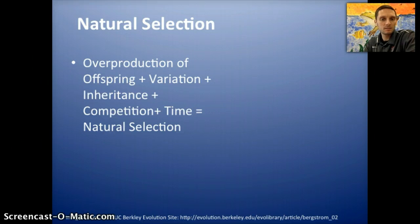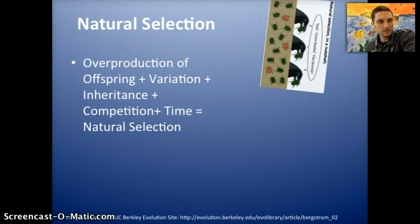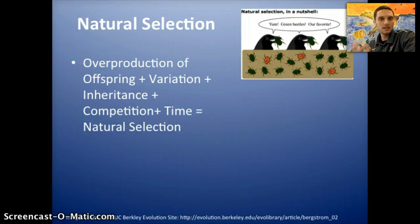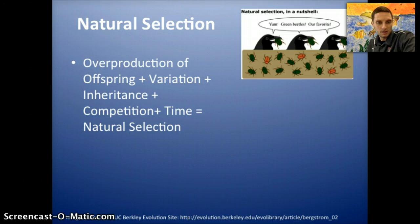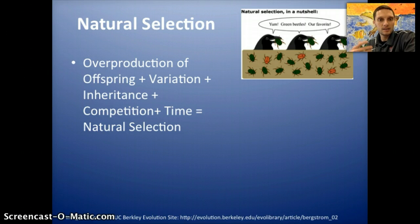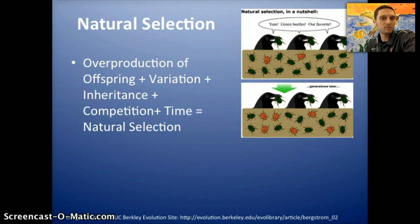We can take a look at this image, taken from UC Berkeley's excellent evolution site. Let's say we have a population of birds that like to eat beetles, and there's variation within that population of beetles in terms of their color. Beetles that stand out or are favored by the birds are going to be consumed more often. With lots of individuals in that population, variation, competition, inheritance, and time, that's eventually going to lead to natural selection. Let's say the birds prefer the green beetles — so they eat the green beetles.